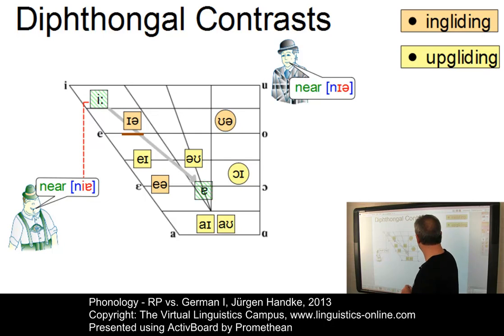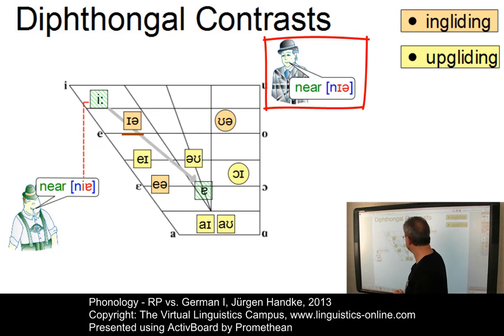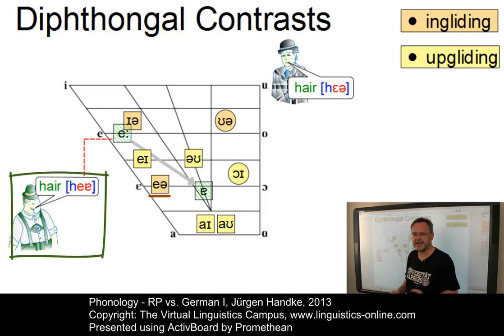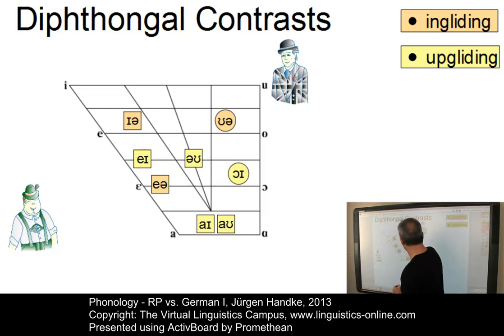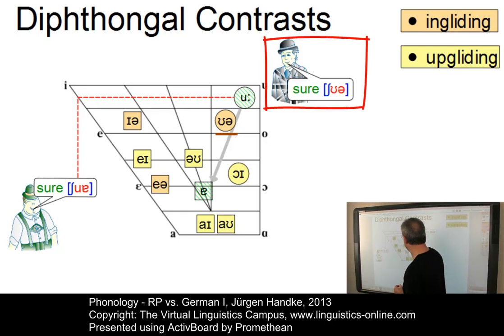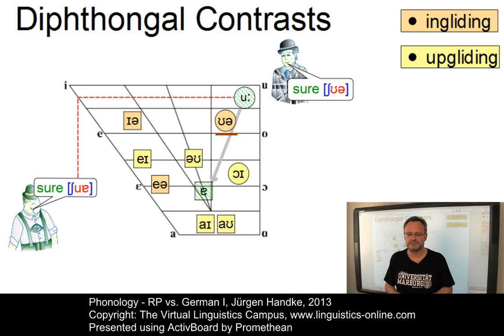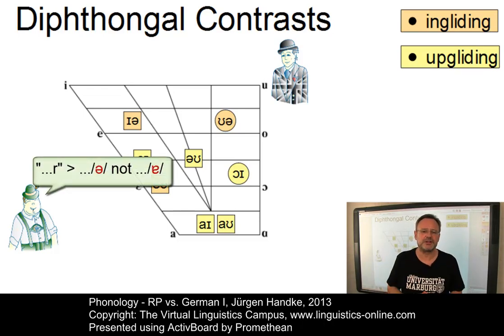Here is the first ingliding diphthong: 'near' versus 'near' — here is the RP value: 'near'. The next one is 'here' versus 'here' — note that the onset would be far too high in German. And here is the last ingliding one: in RP it is 'sure', and Germans would most likely come up with something like 'schwa'. My advice to all German speakers of RP is: try to ignore the orthographical R and its German low A realization, and realize the offset by means of a schwa instead.